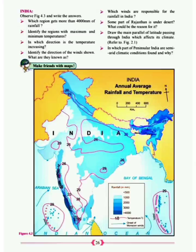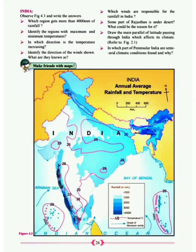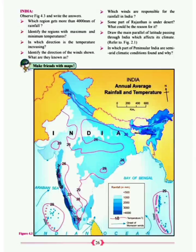Observe figure 4.3 and write your answers. Which region gets more than 4000mm of rainfall? If you see the scale given, dark blue indicates more than 4000mm. Looking at the map, one area is in the north in the eastern part and another is in the south in the western part. So you can say that the north eastern part and south western part of India receive heavy rainfall.